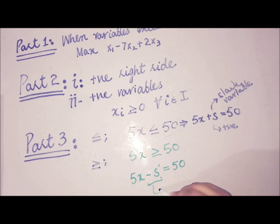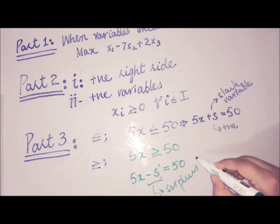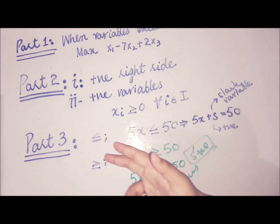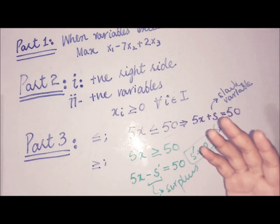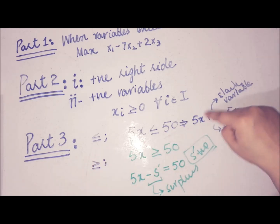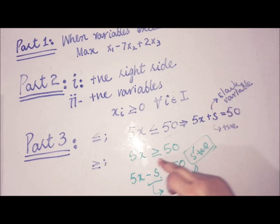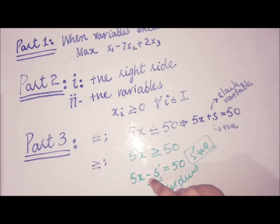The variable s-dash is the surplus amount of resources. Because we are subtracting it, s-dash is also positive by nature. So: when there is a less than or equal to relationship between available resources and usage, we add a slack variable; when there is a greater than or equal to relationship, we subtract a surplus variable to convert the constraint to equality form.